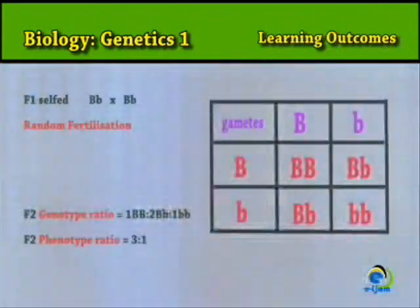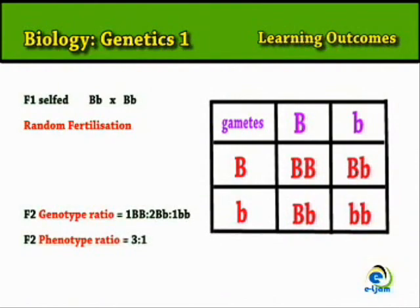Let's see what genotypic ratio and phenotypic ratio would result if two mice from the first generation selfed.